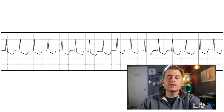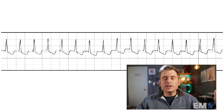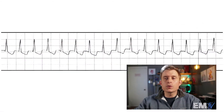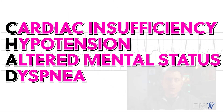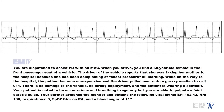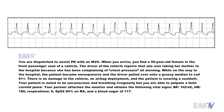Now let's make the determination whether it is stable or unstable. To make my decision, I'll use the acronym CHAD — Cardiac insufficiency, Hypotension, Alteration in mental status, and Dyspnea. Let's take a look at the scenario more closely. At first, it seems like we're going out for a trauma patient because you were called for an MVC. But sometimes dispatch does get it wrong. If you read further in the scenario, your patient was actually the passenger who became unresponsive and the driver pulled over into a grassy median to call for help.